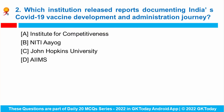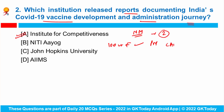Question number two: which institution released reports documenting India's COVID-19 vaccine development and administration journey? Union Health Minister Mansukh Mandviya released two reports from the Institute for Competitiveness documenting India's COVID-19 vaccine development and vaccine administration journey. The report on vaccine development focused on 100 crore rupees support from PM Cares Fund for indigenous vaccine development and collaboration of Indian pharma companies with global candidates for clinical trials. The report on administration focused on adoption of mobile applications such as COVID and Aarogya Setu.